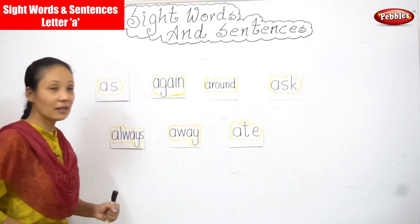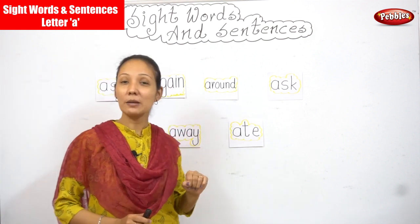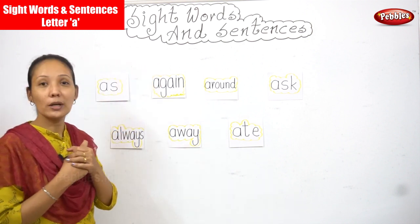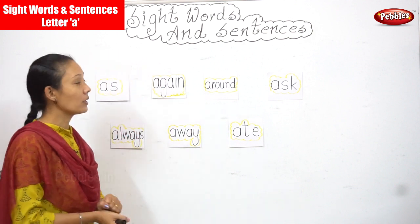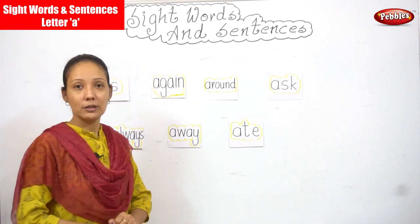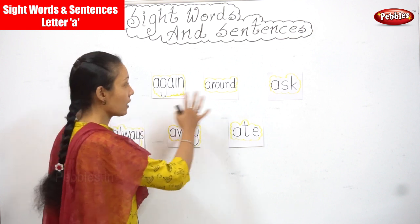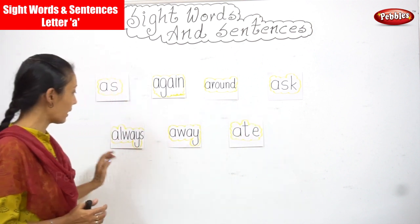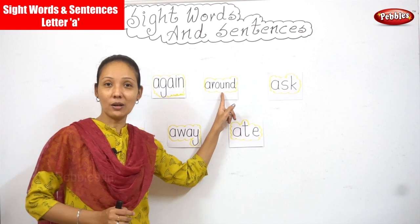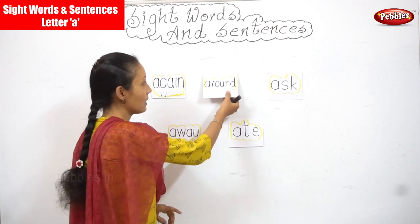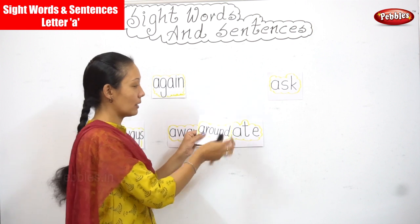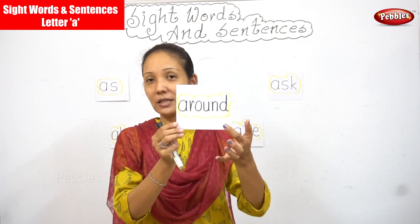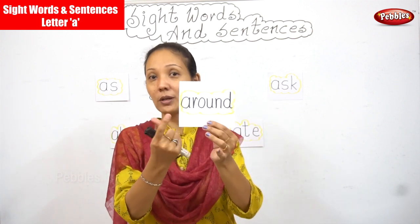Now as I say the word, let's remove that particular word from the board. I want you to point it out. I'm saying the word 'around' — where is that word? Can you look at all these words? Your word 'around' is here. Shall we remove 'around' from the board? I'll show it to you closer — the word is 'around'.